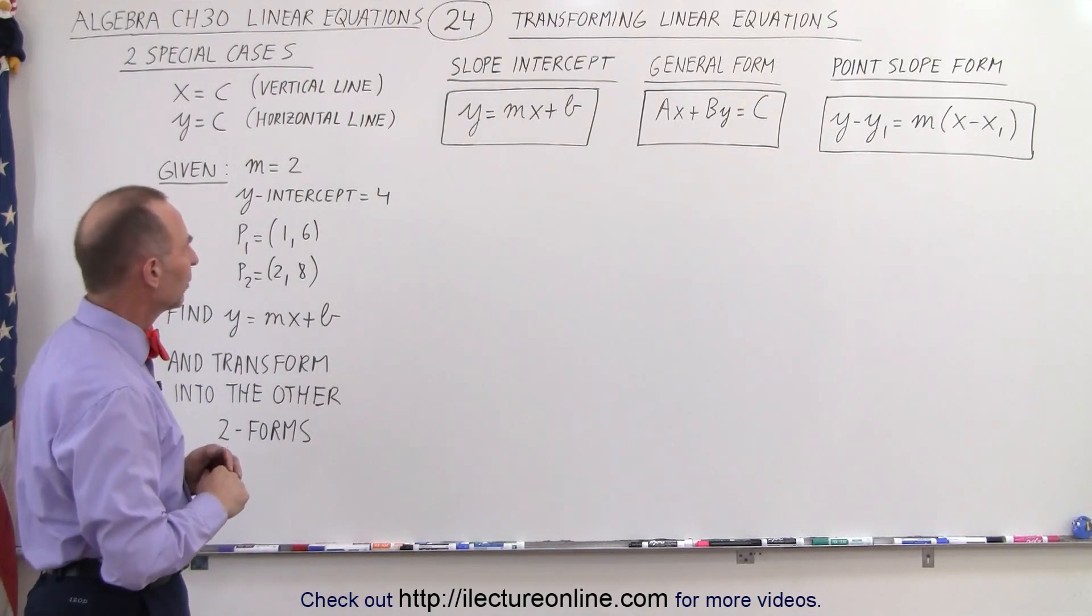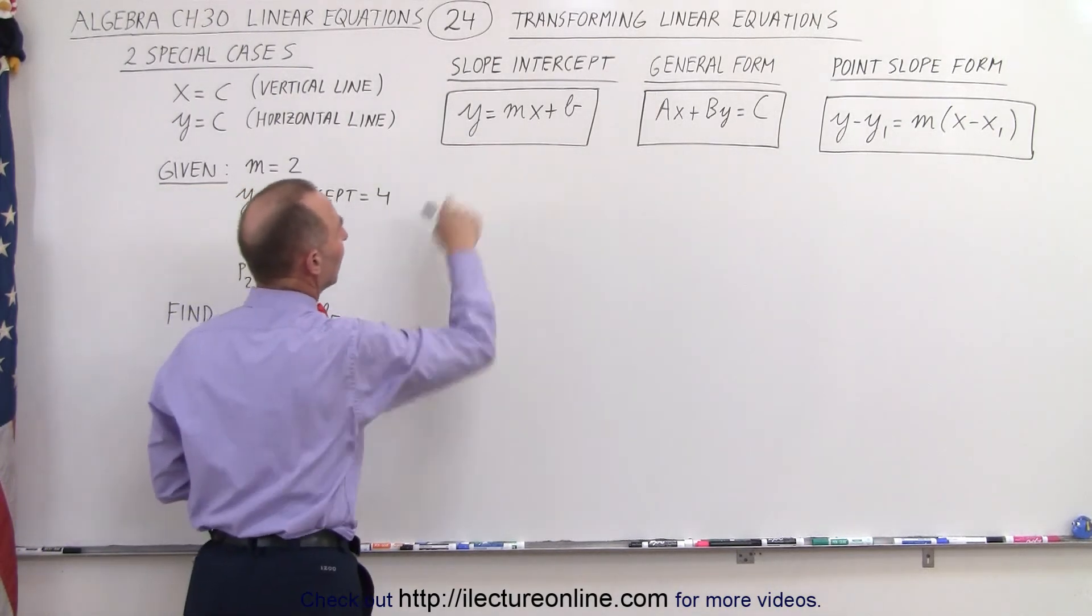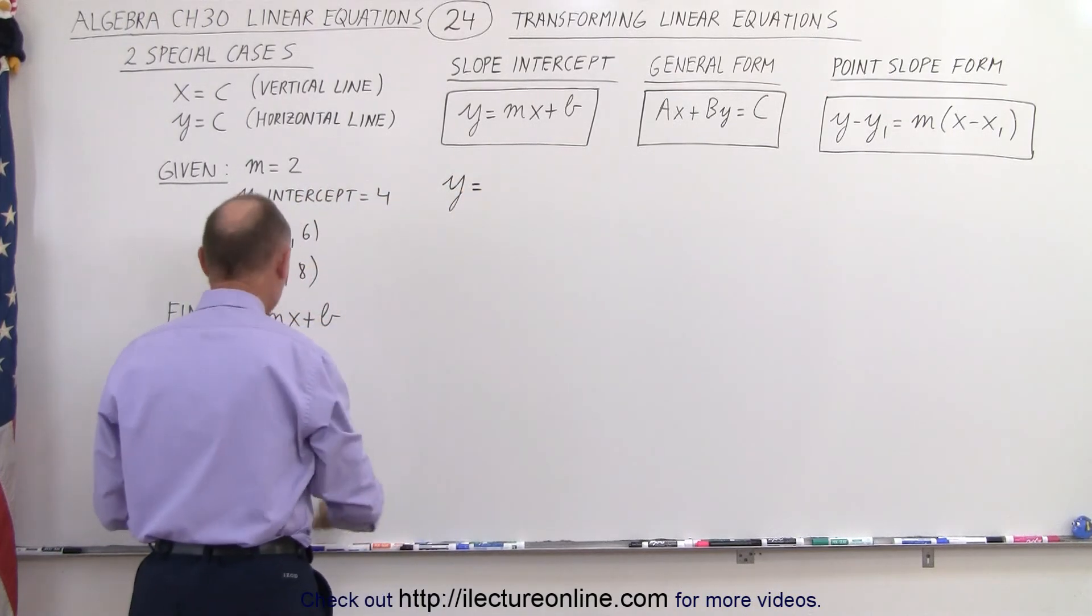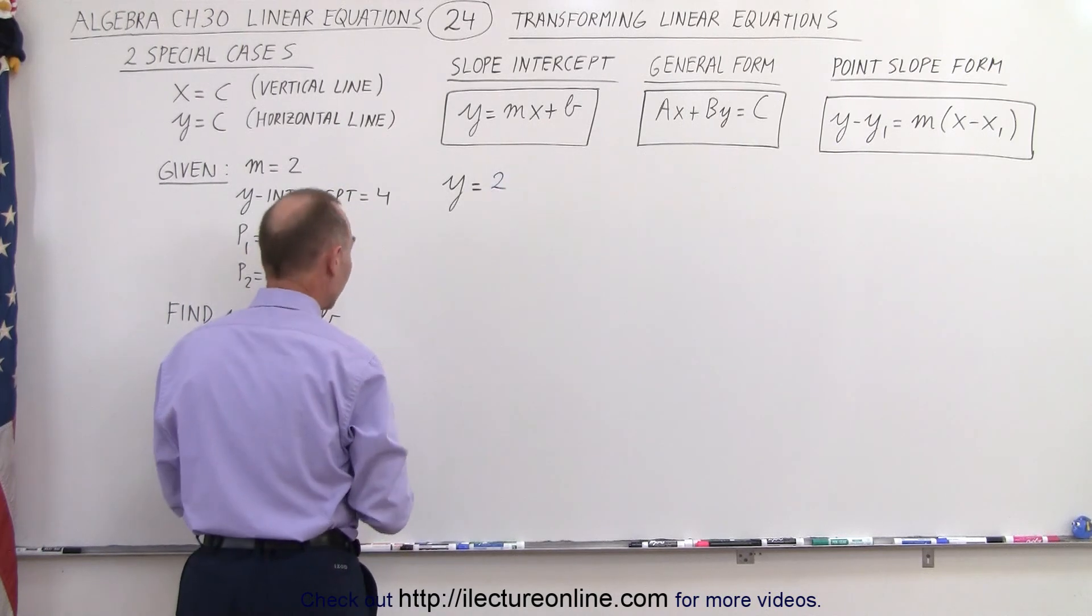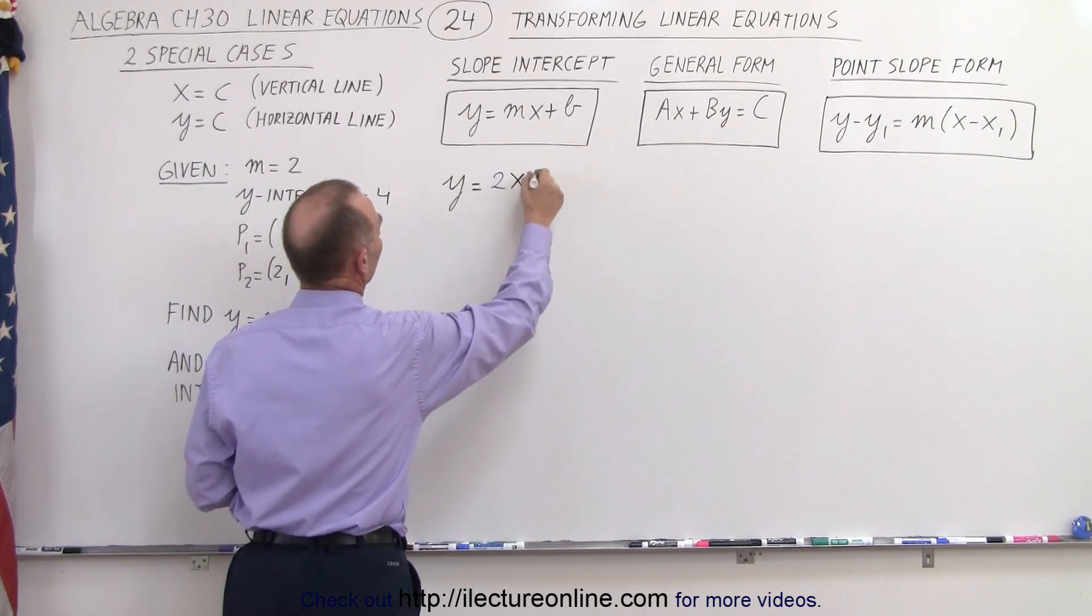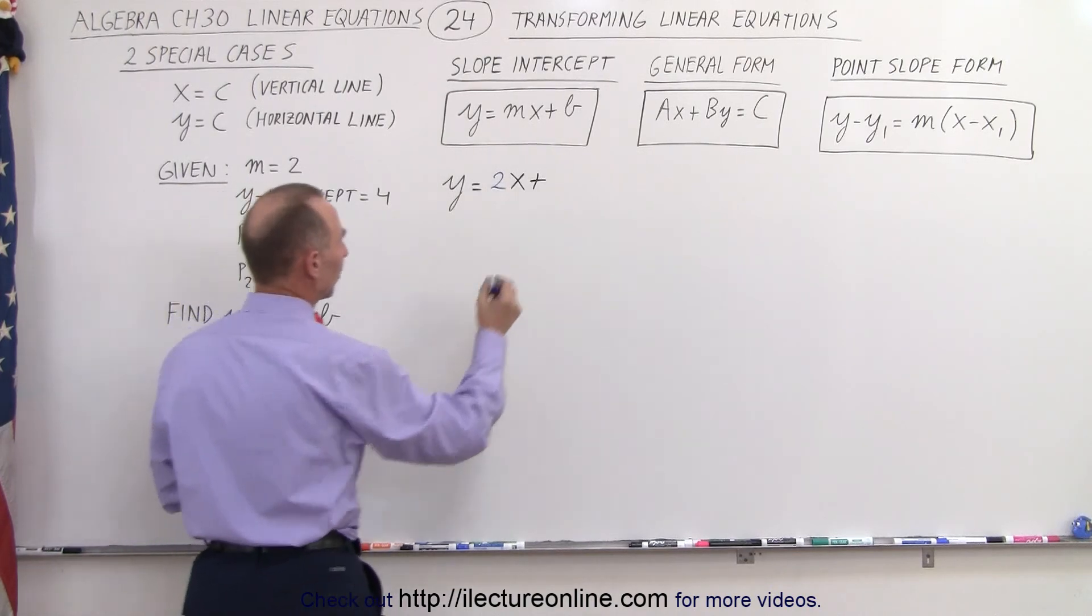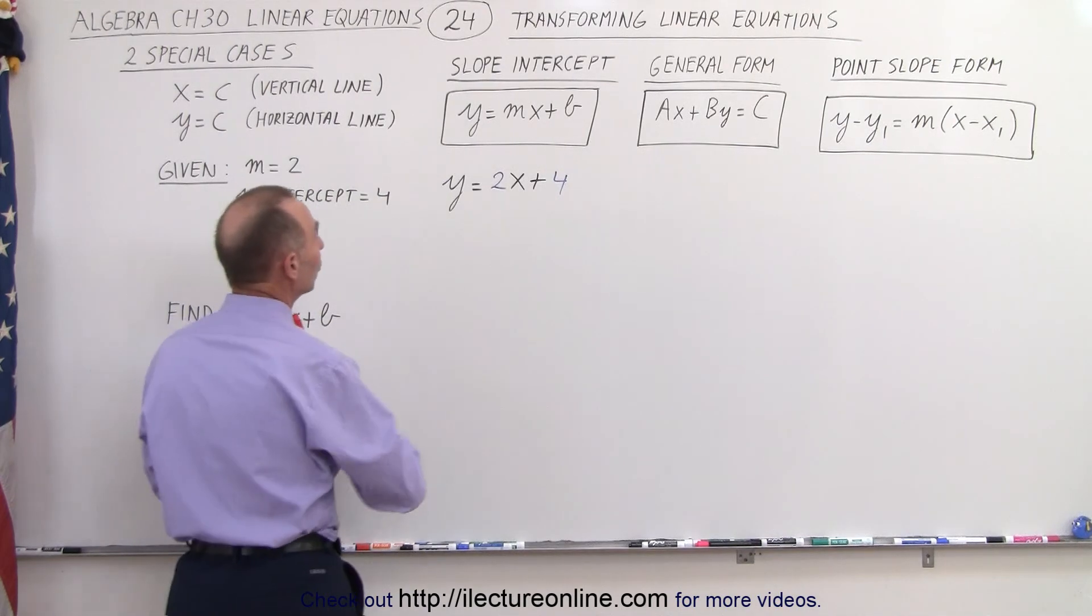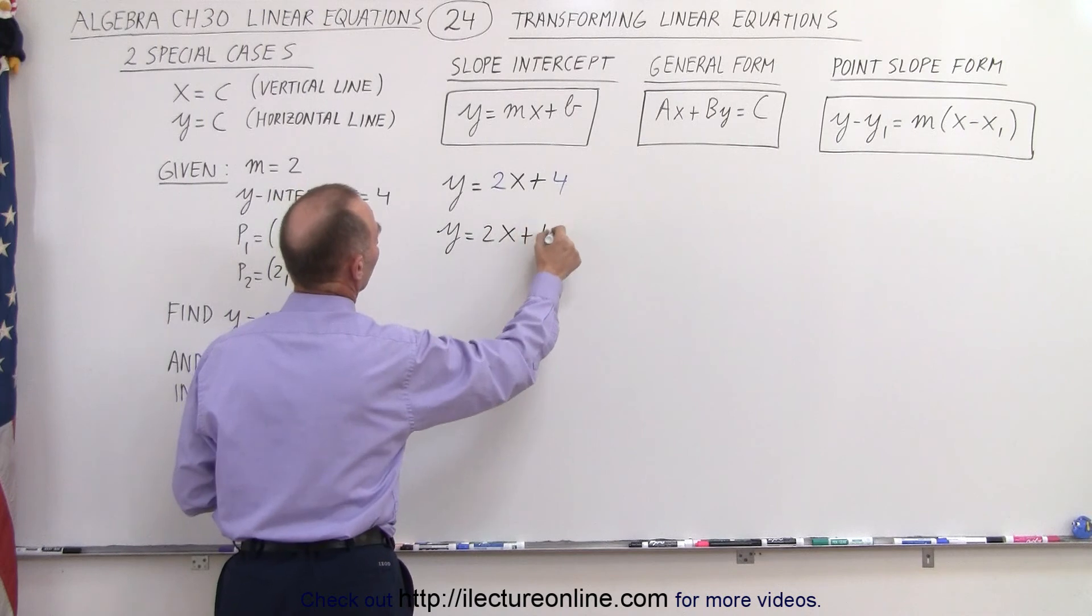Alright, well, the first thing is easy. If we're given the slope and the y-intercept, we can plug it right in and write the new equation. So y equals the slope m is equal to 2, so write 2 times x plus the y-intercept, that's equal to 4, and so we simply write the number 4. So that's easy enough to come up with that equation if we're given the slope and the y-intercept. So y equals 2x plus 4.